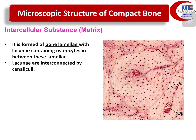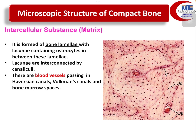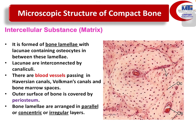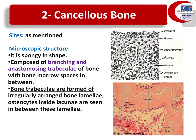To recap: compact bone is formed of different arrangements and organizations of bone lamellae. Osteocytes have minute processes running in canaliculi between lamellae. Blood vessels and nerves are connected from the periosteum outside to the endostium and medullary cavities through Volkmann's and Haversian canals. The outer surface is covered by periosteum, and the inner surface by endostium, which contains osteogenic cells and osteoblasts for bone formation, and osteoclasts which are bone resorbing cells.